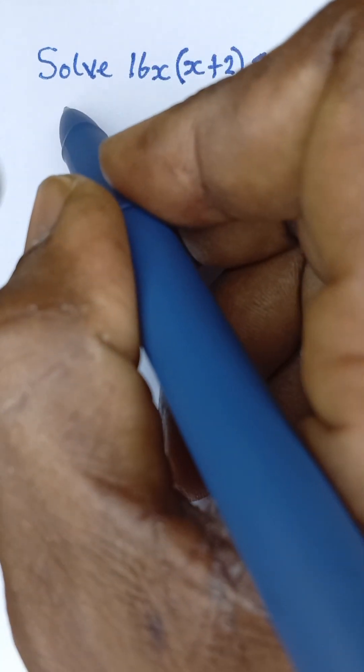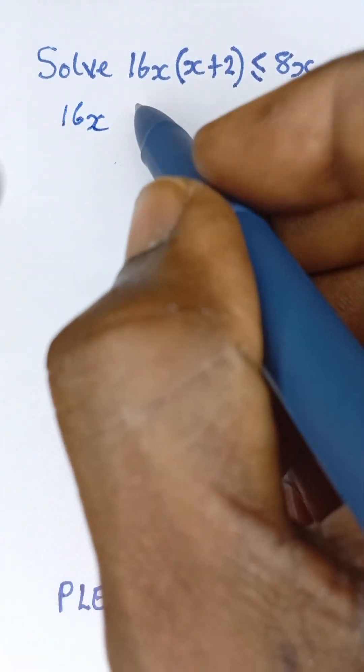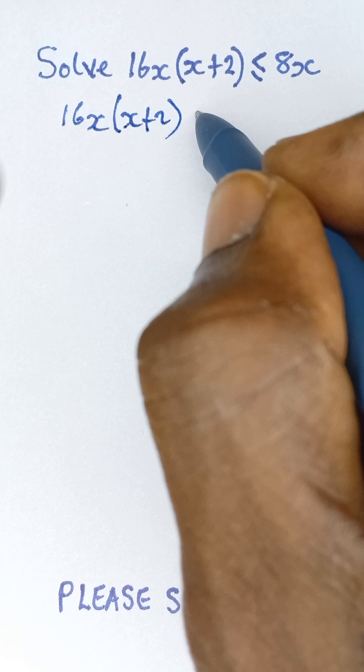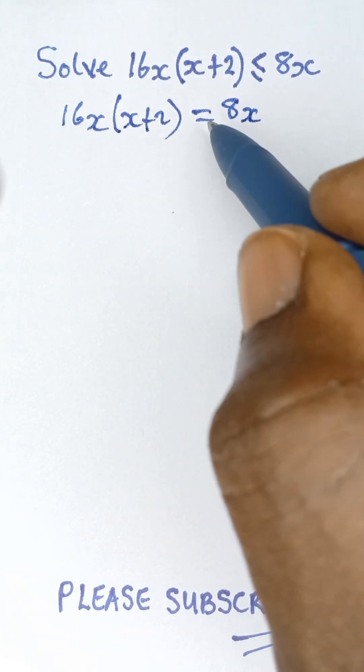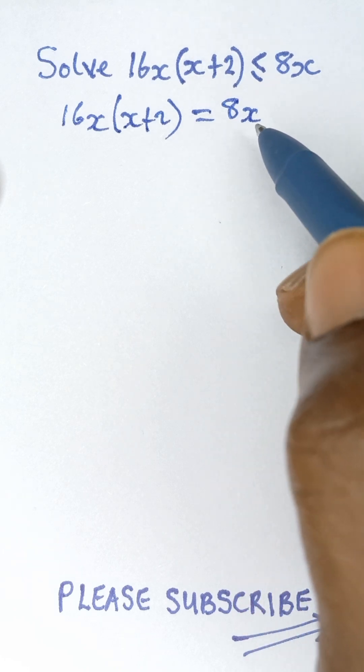That will give us 16x(x+2) = 8x. Now we can divide both sides by 8. Please don't make the mistake of dividing both sides by 8x, you'll get the answer wrong. Just divide both sides by 8.